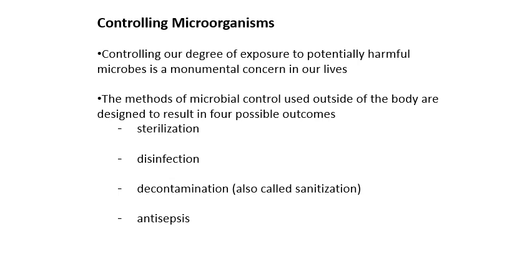Decontamination is a step below disinfection — it's really just reducing microbial load, the equivalent of washing your dishes or washing your hands. We're dropping the microbial load but not necessarily killing everything. Antisepsis is a type of microbial control that's safe to use on human tissues — on the surface of your skin, for example, using iodine would be an example of an antiseptic.